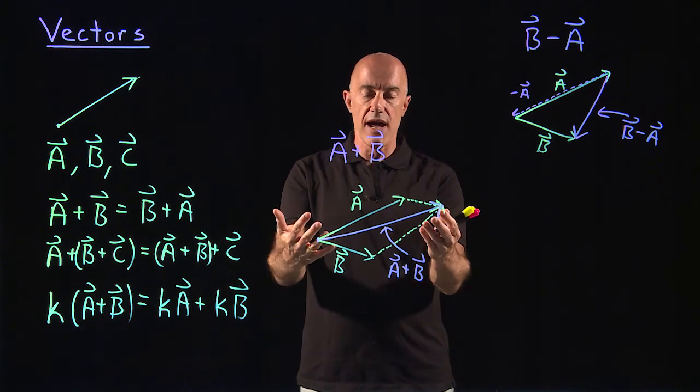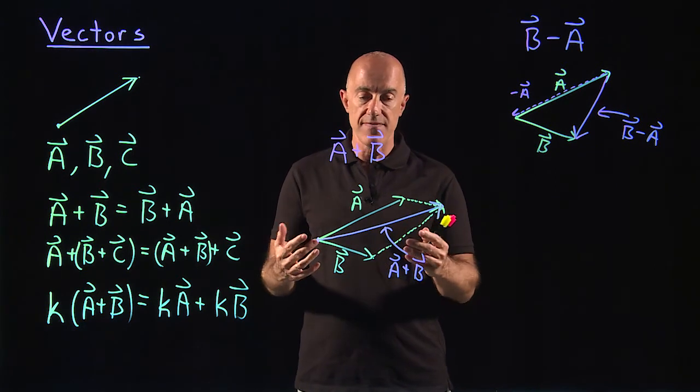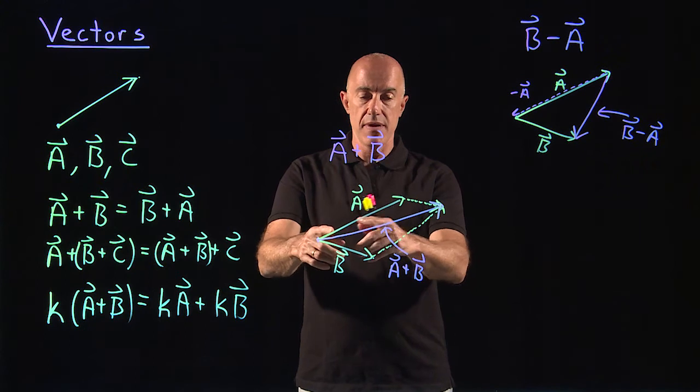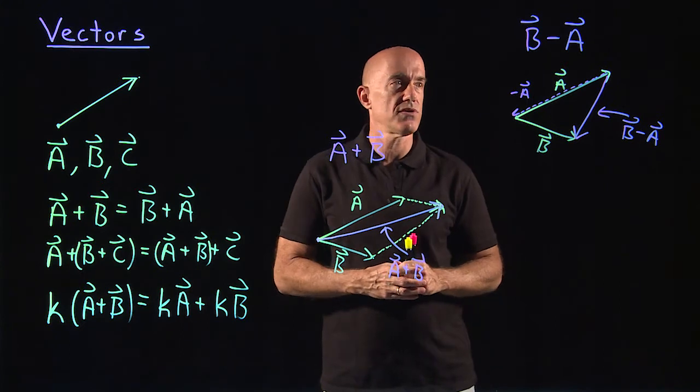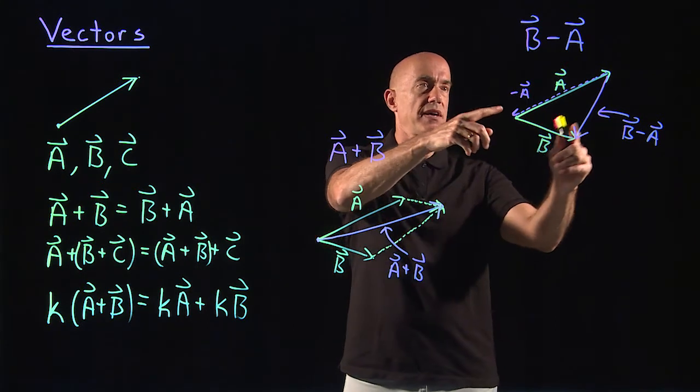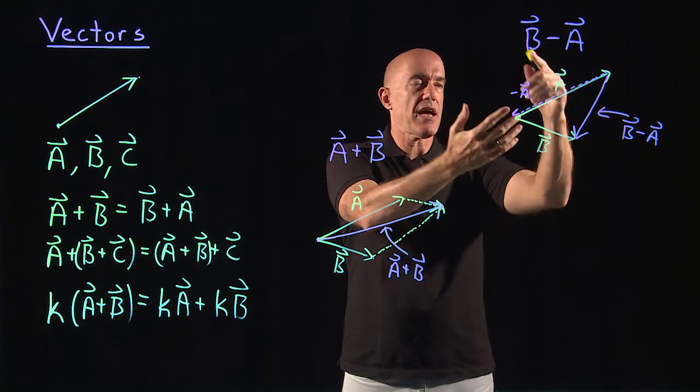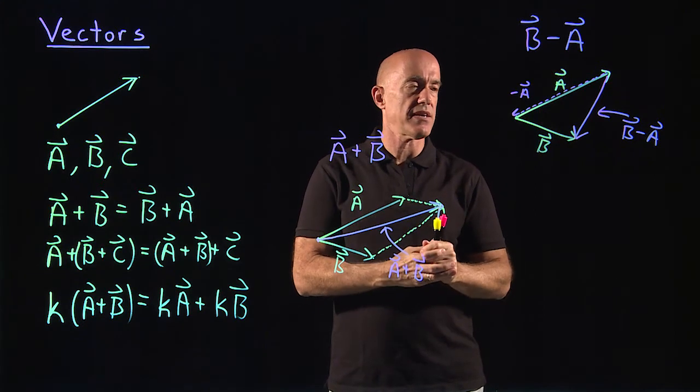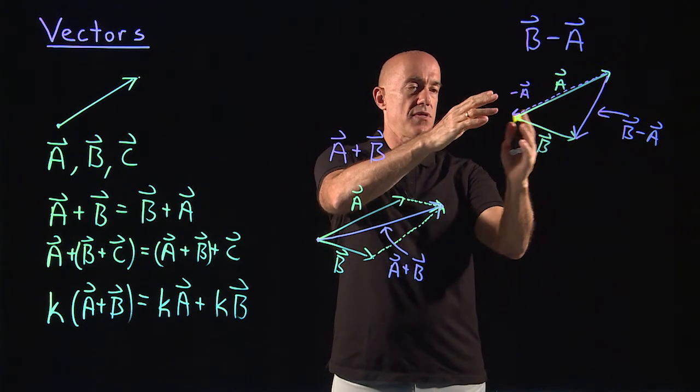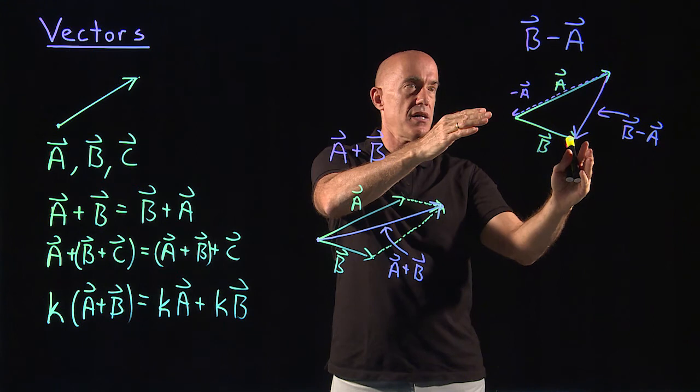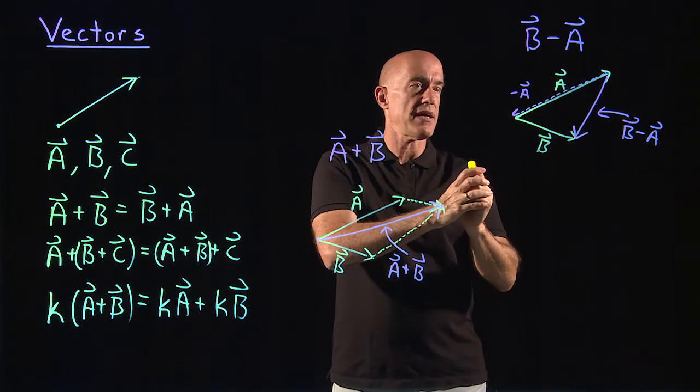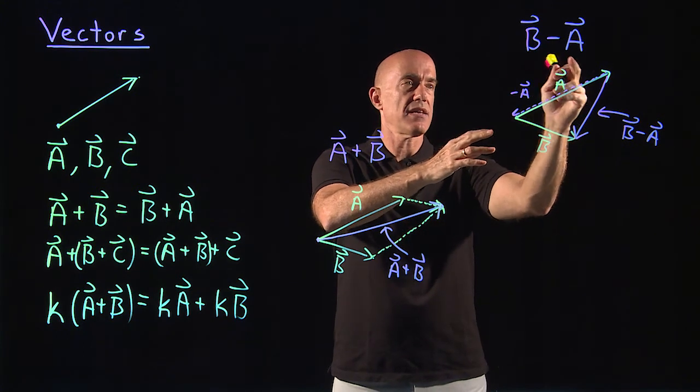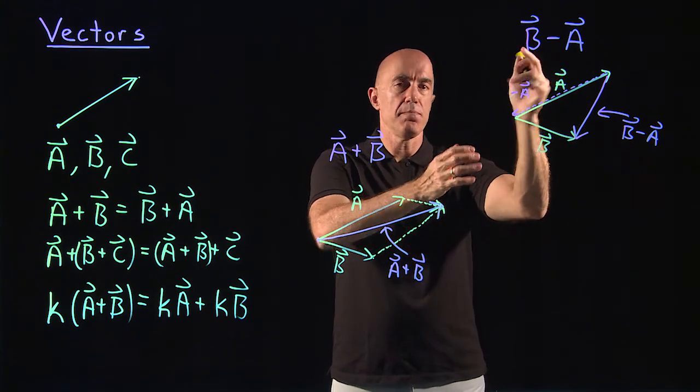I also showed you how to add vectors. You add vectors by putting them head to tail. And I also showed you how to subtract vectors. You subtract vectors by flipping the direction of the negative vector. So that if they're tail to tail, then b minus a is the vector which is head to head, that points from a, the negative one, to b.